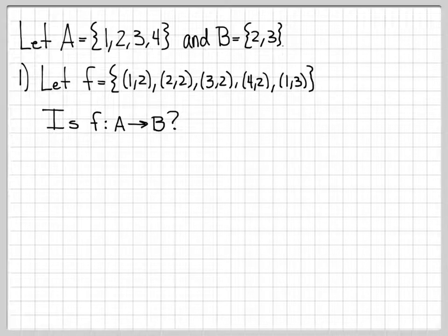You can see that the first coordinate of every pair in F comes from A. So the first coordinates are 1, 2, 3, 4, and 1. And the second coordinate of every element of F comes from B. It's either 2 or 3. But what we're asking now is, is this actually a function from A to B?